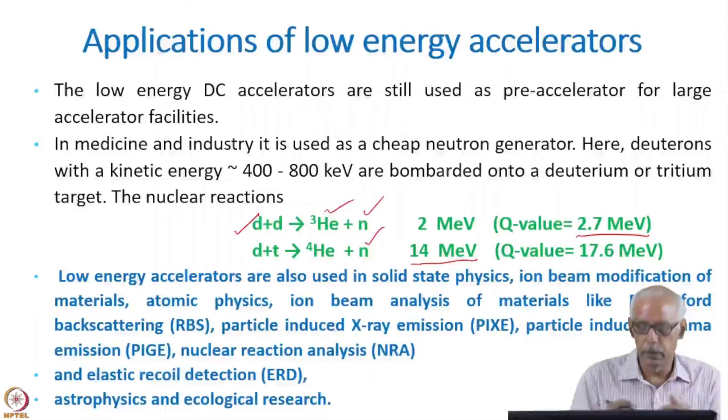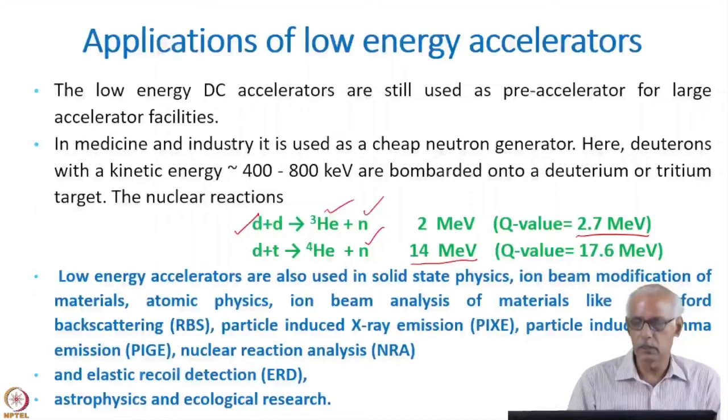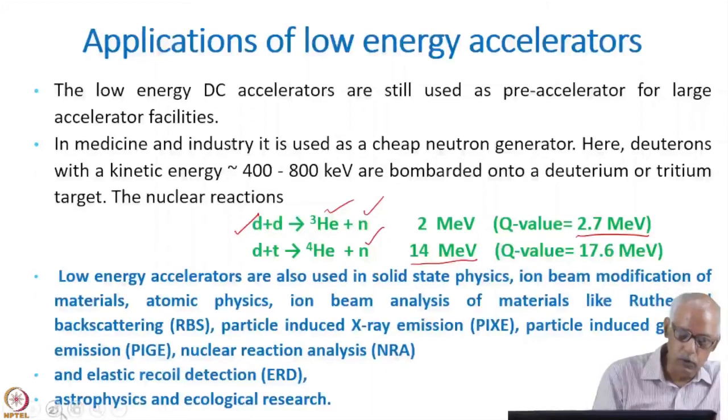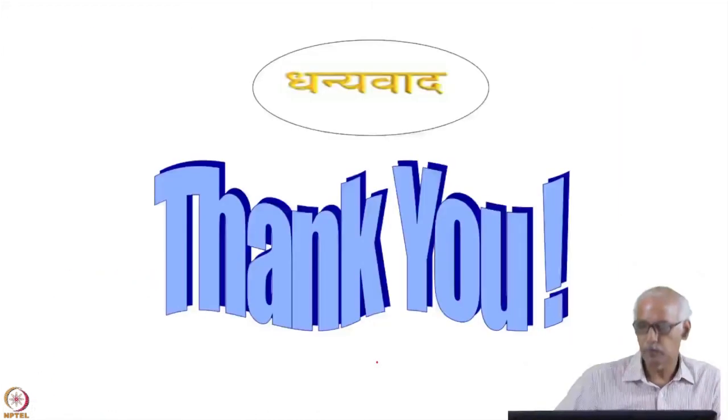So even these particles, these accelerated particles from any of these DC accelerators, even Cockcroft-Walton type of things, are used for many, many applications. Some of them are listed here, and they are used in solid-state physics, ion beam modification of materials, atomic physics, ion beam analysis of materials like Rutherford backscattering, particle induced X-ray emission which is called PIXE, particle induced gamma-ray emission which is called PIGE, nuclear reaction analysis, and elastic recoil detection, astrophysics. This is very useful for astrophysics. And nowadays, they are finding very great uses in ecological research also.